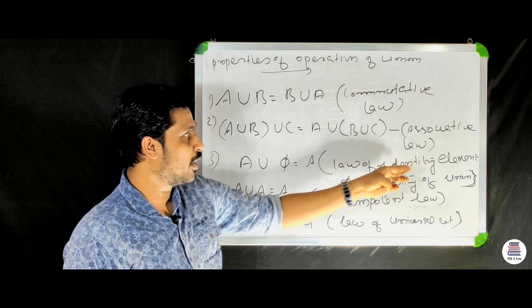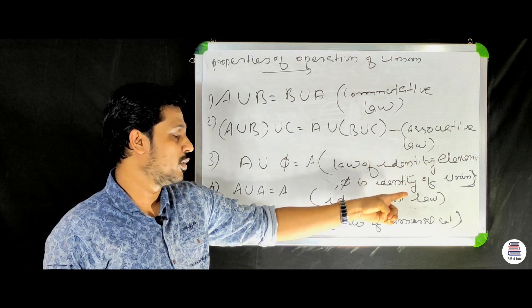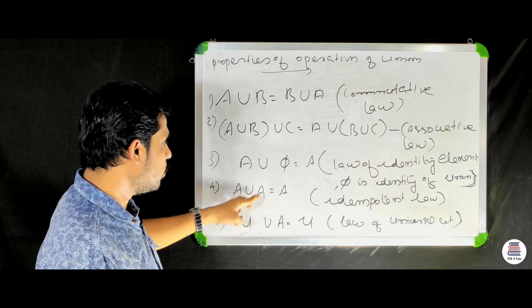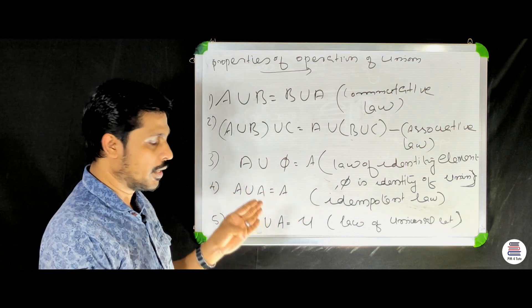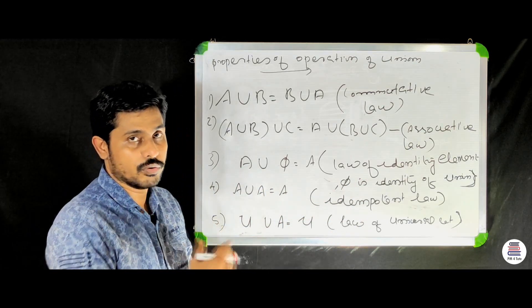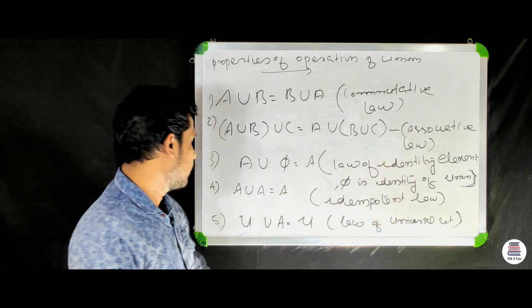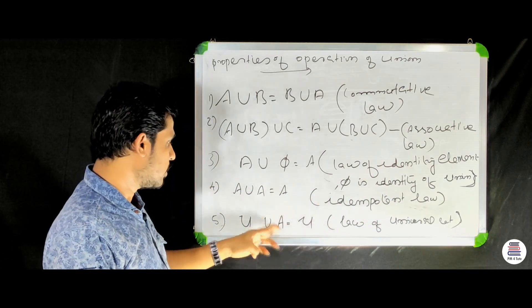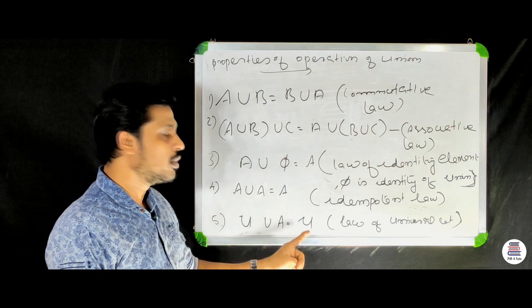The law of identity: the null set is the identity element of union. A union A equals A — the same set unioned with itself gives the same set. And the universal set union A equals the universal set.